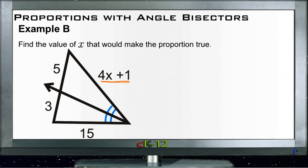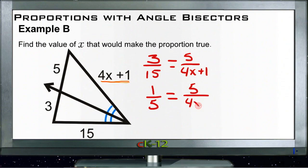So let's set up our ratio. We know that 3 compares to 15 in the way that 5 compares to 4x plus 1. So let's do any reducing we can. 3 into 15, those both divide by 3, so that gives us 1 into 5 compares to 5 into 4x plus 1.